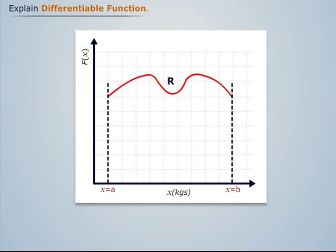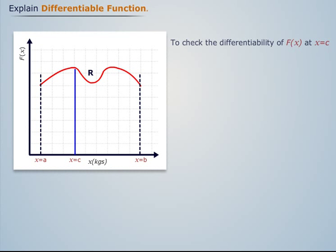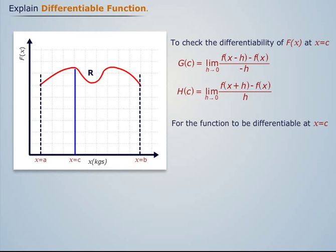Now let's understand this in more mathematical terms. Let us take a point x equal to c in the region a to b and check the differentiability of f(x) at c. To do so, we calculate g(c) and h(c). For the function to be differentiable at x equal to c, g(c) should be equal to h(c) — that is, its derivative should exist at x equal to c.